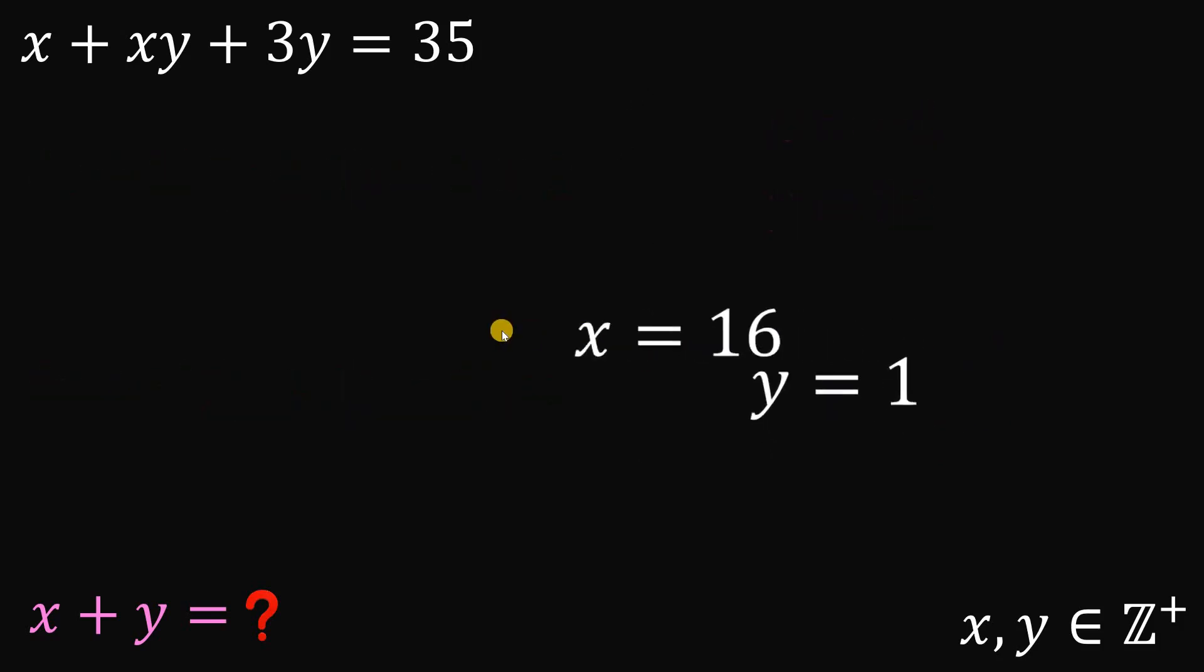Therefore, the value of x and y are 16 and 1. Now, let's check. 16, this x is 16. We have plus 16 times 1 plus 3 times 1. So 16 plus 16 is 32 plus 3 is just 35. Alright.